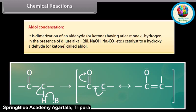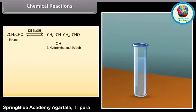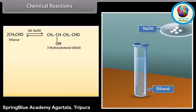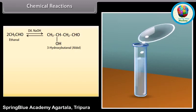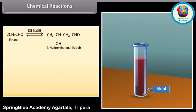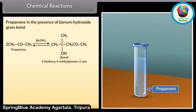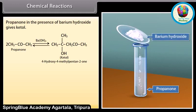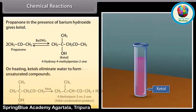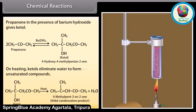Aldol condensation: it is the dimerization of an aldehyde or ketone having at least one alpha hydrogen in the presence of dilute alkali such as dilute sodium hydroxide, sodium carbonate, etc., as catalyst, to give a hydroxy aldehyde or ketone called aldol. Ethanal in the presence of dilute sodium hydroxide undergoes condensation to form a syrupy liquid known as aldol. On heating, aldols eliminate water to form unsaturated compounds. Propanone in the presence of barium hydroxide gives ketol; on heating, ketols eliminate water to form unsaturated compounds.